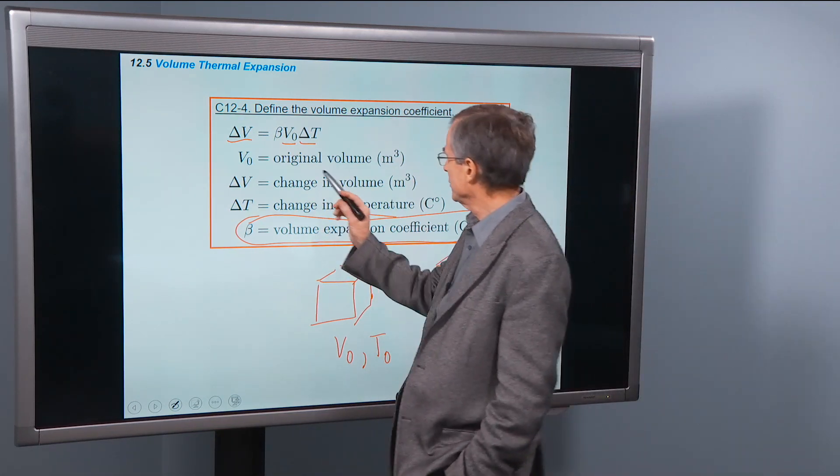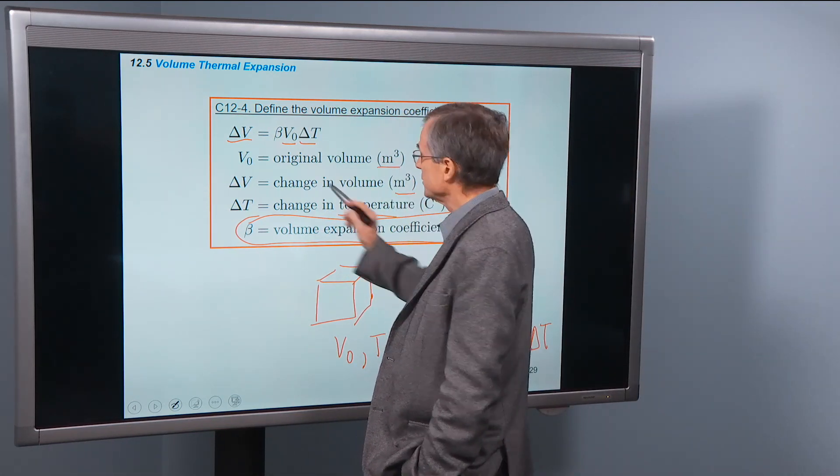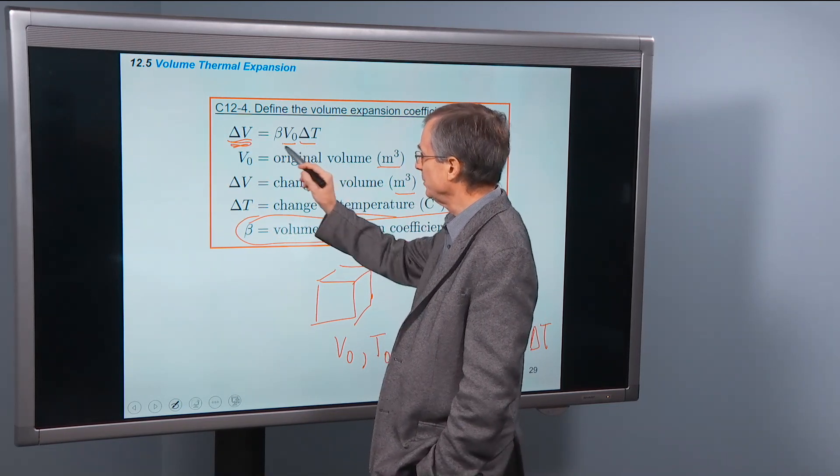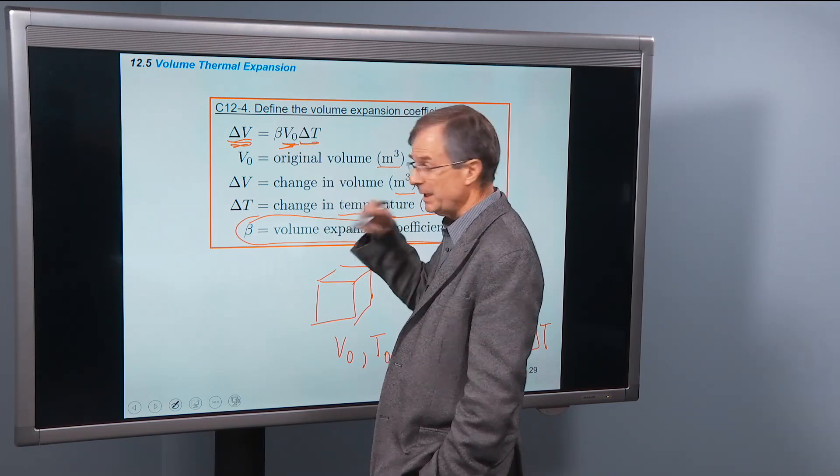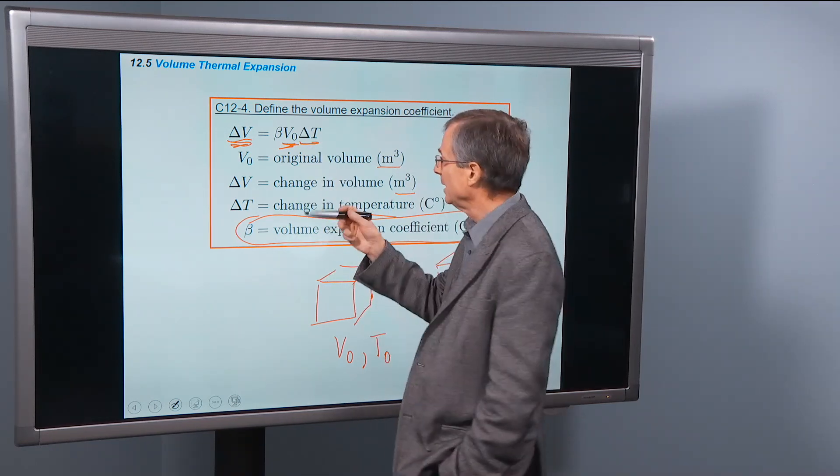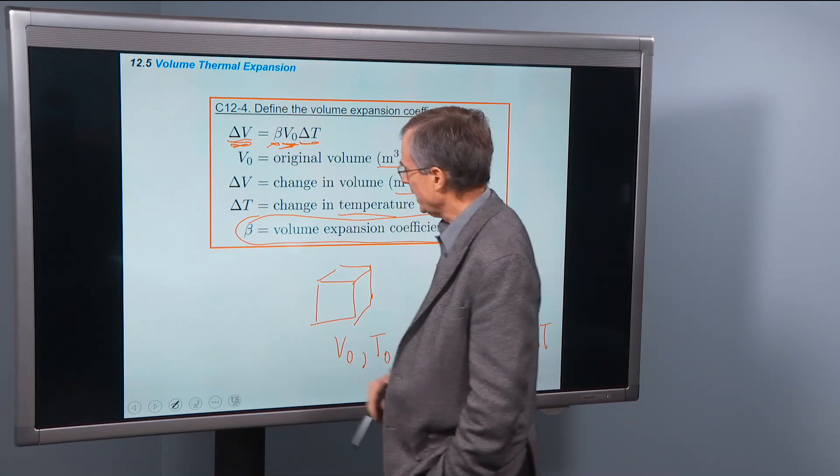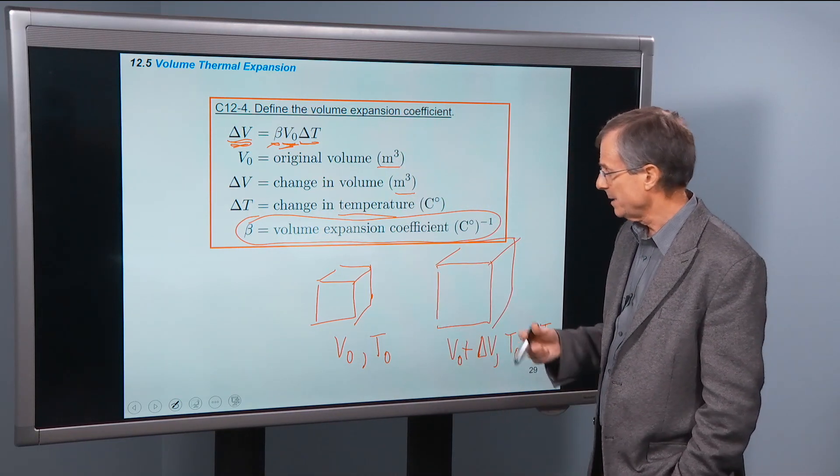Why? Well, volumes are measured in meters cubed. So this is measured in meters cubed, this is measured in meters cubed. Delta T, again, is measured in degrees C. So to get the units right, beta has to be measured, again, the same as alpha, in inverse degrees centigrade.